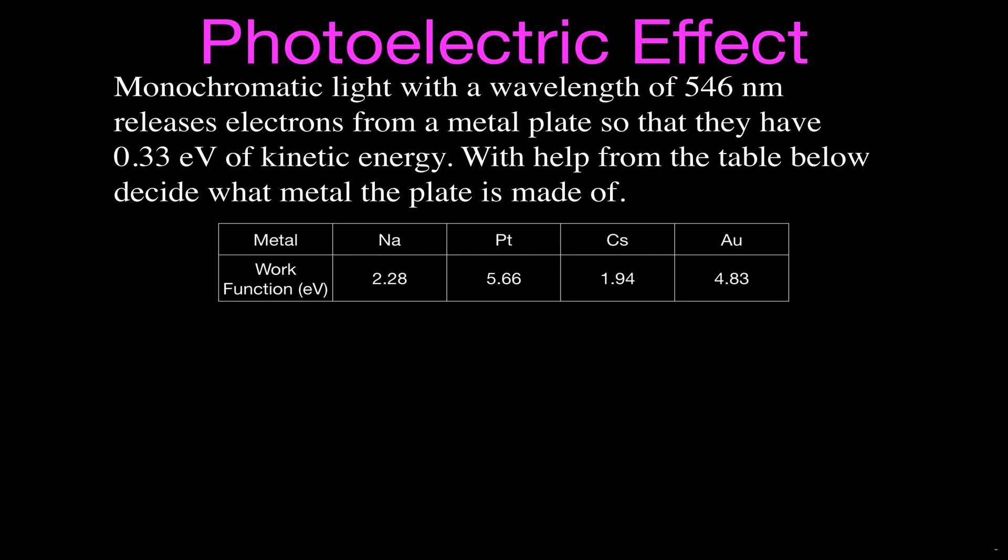It says here that monochromatic light with a wavelength of 546 nanometers releases electrons from the metal plate so that they have 0.33 electron volts of kinetic energy, and we want to know with help from the table below, decide what metal the plate is made of.